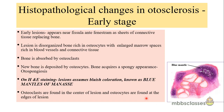In the histopathology of otosclerosis, the early stage shows bone resorption along with deposition of new bone. This new bone has enlarged marrow spaces rich in blood vessels and connective tissue. Bone is absorbed by osteoclasts and new bone is deposited by osteoblasts. In the early stage the bone has a typical spongy appearance, which is why the disease is also called otospongiosis. With H&E staining, early lesions assume a bluish coloration called the blue mantle of Manasse.